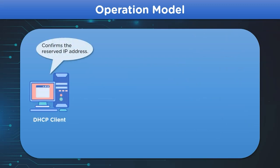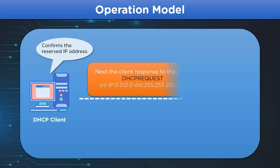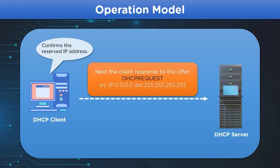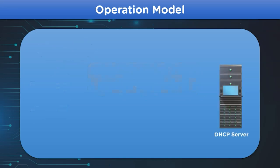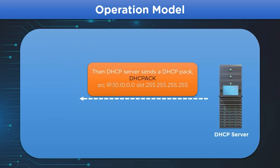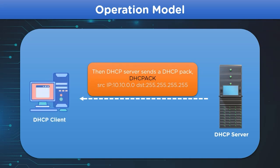In the third phase, the client responds to the DHCP server's offer through a DHCP request message, requesting the offered IP address and relevant network configuration for the system. Then in the last phase, the server acknowledges the request from the client and sends a DHCP packet to the client, which is comprised of the full network configuration for the client device.